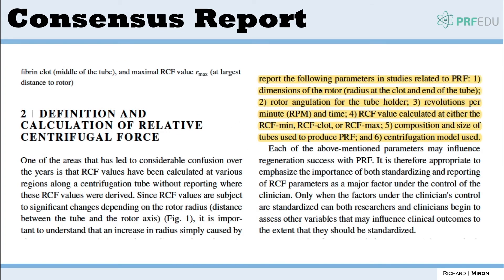This standardization article on relative centrifugal forces in platelet-rich fibrin studies was published in 2019 in the Journal of Periodontology. It specified six things that are necessary to report in every article on platelet-rich fibrin: number one, the dimensions of the rotor; number two, the radius reported either at the clot or at the end of the tube; number three, the angulation if using a fixed-angle centrifuge; number four, the RPM; and number five, the amount of time.